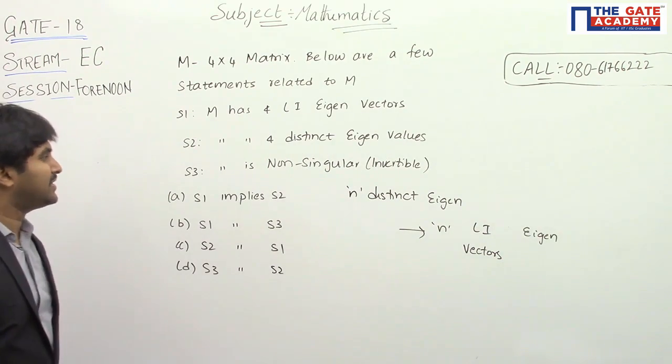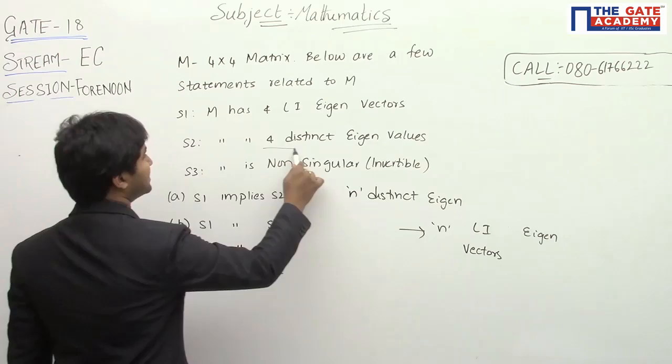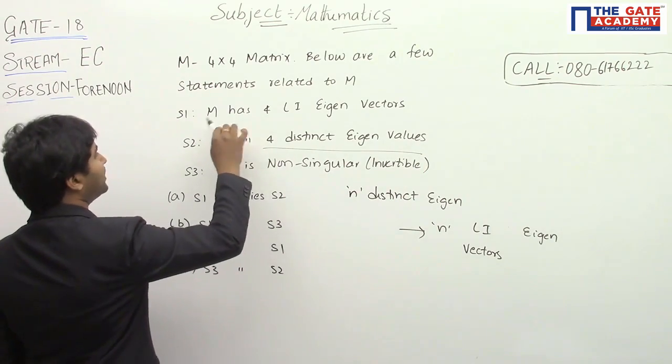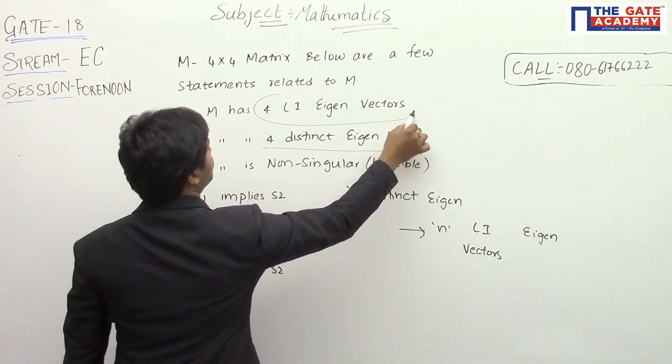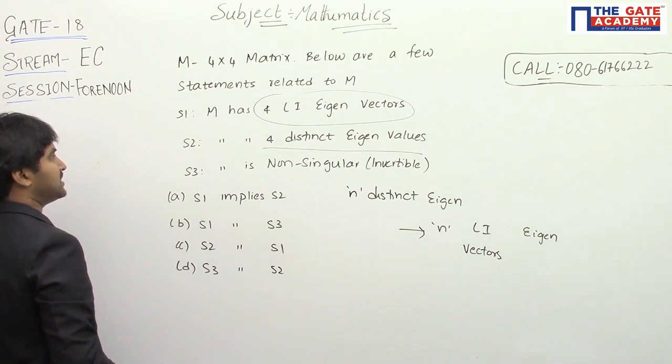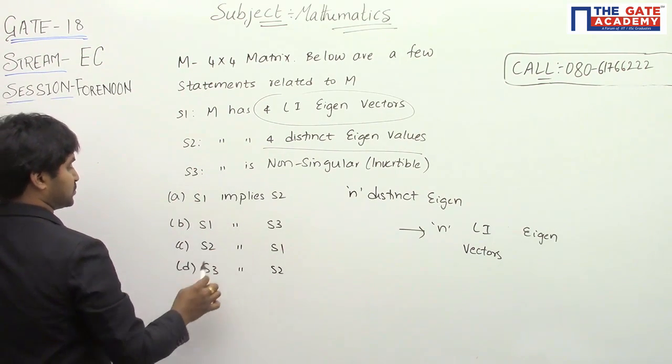So this is what we have learned. It means that when you are having four distinct eigenvalues, it will automatically imply that it is going to have four eigenvectors. So the answer for the question is S2 implies S1.